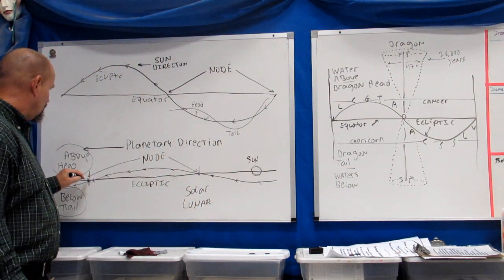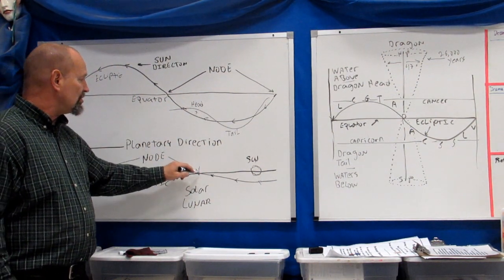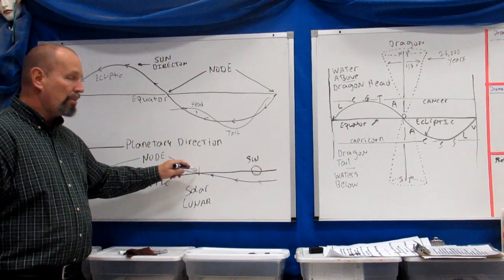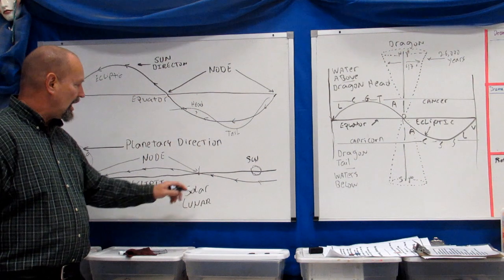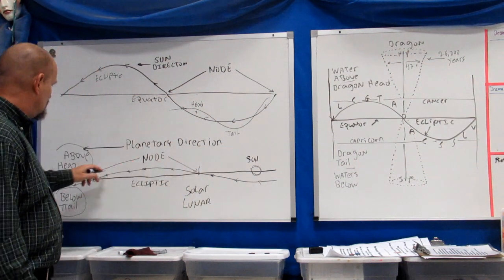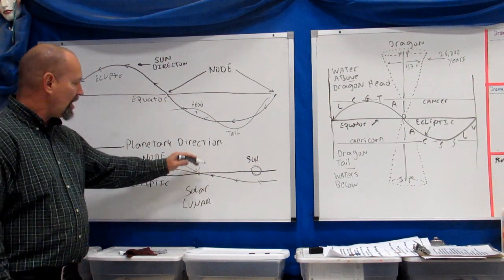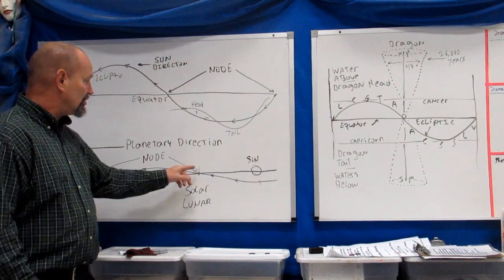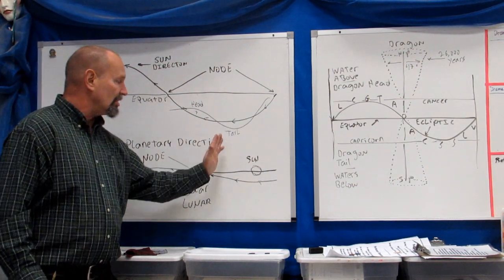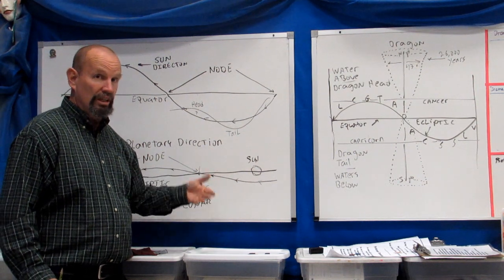There are also nodes on this line. These nodes are the points of crossing. It's at these points right here, as the moon and the planets come across this, that solar and lunar eclipses can take place. These nodes move in different directions depending on what time of year and where they're at.